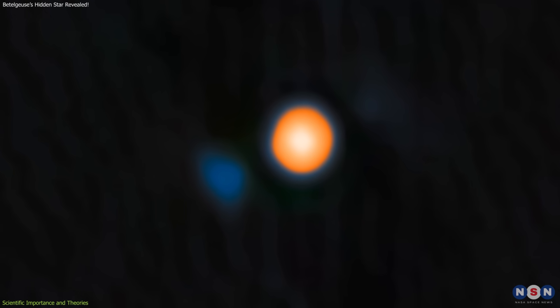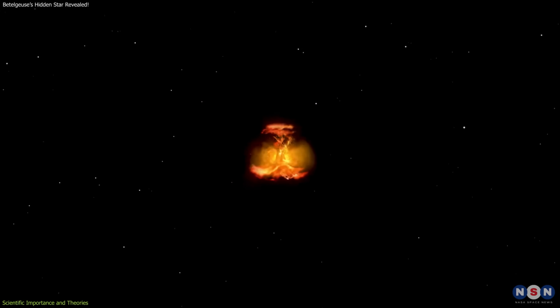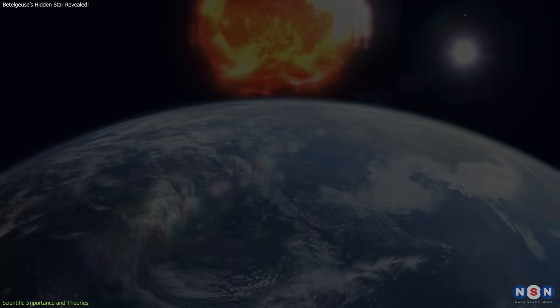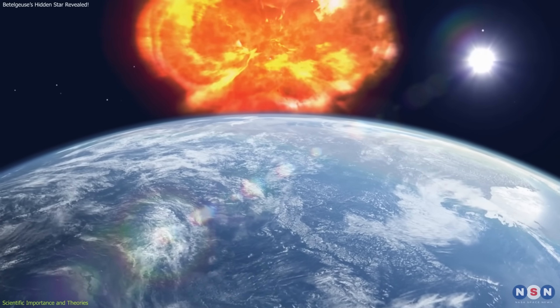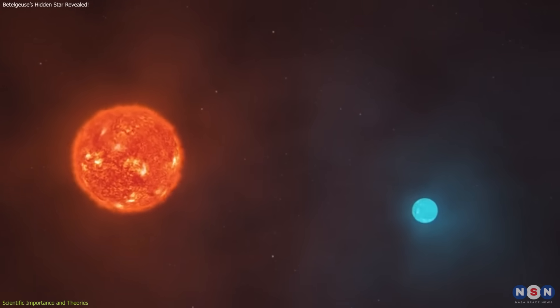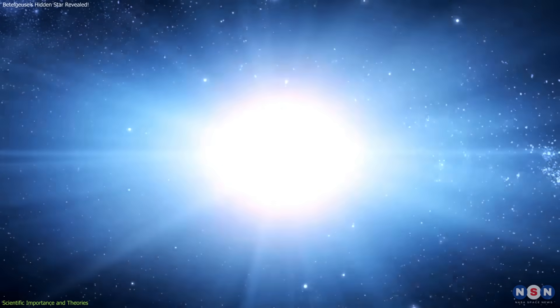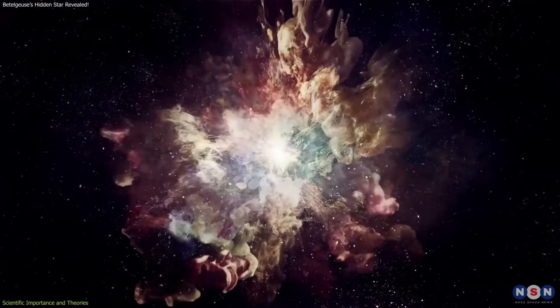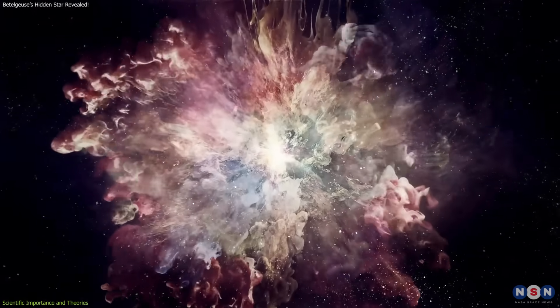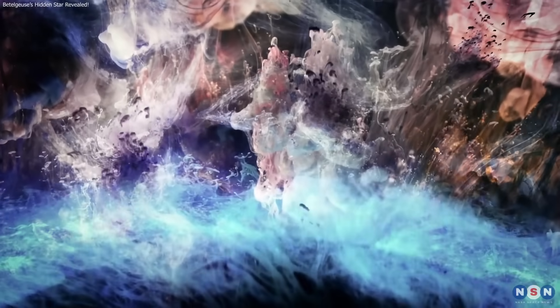Understanding this interaction is more than an academic exercise. Betelgeuse's eventual supernova, when it happens, will be visible from Earth, even in daylight. Knowing whether a companion is present changes models for the explosion and its aftermath. It may determine how much material is ejected, what type of supernova we see, and how the remnant evolves.